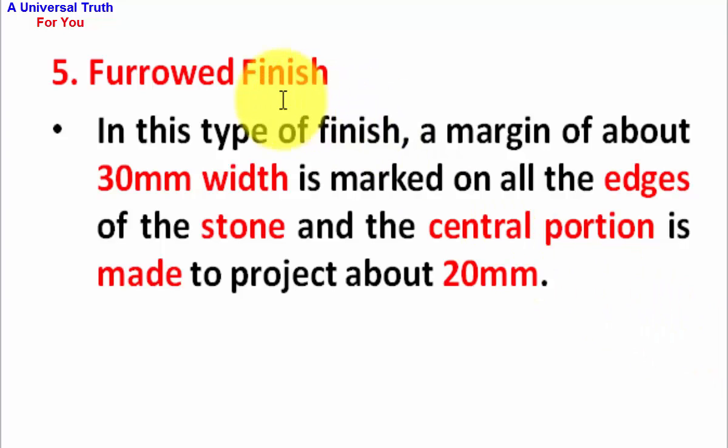Number 5, Furrowed finish. In this type of finish, a margin of about 30 mm width is marked on all the edges of the stone, and the central portion is made to project about 20 mm.